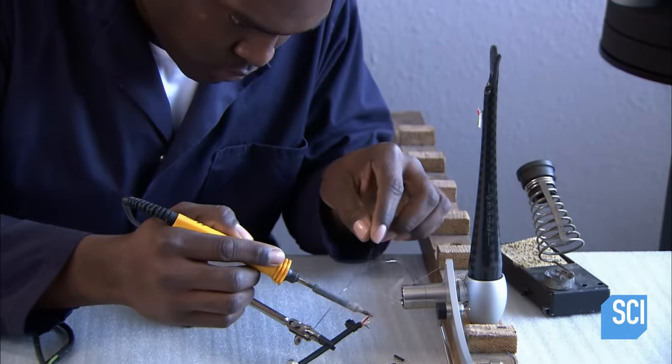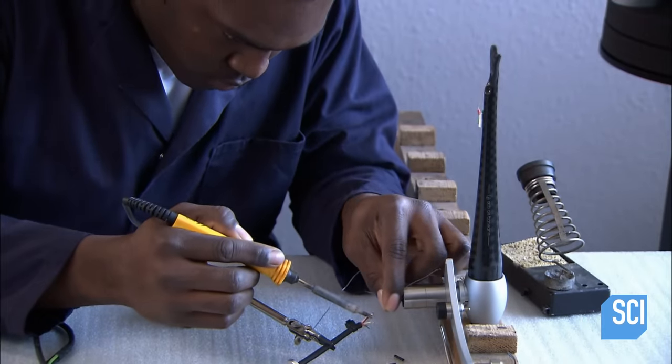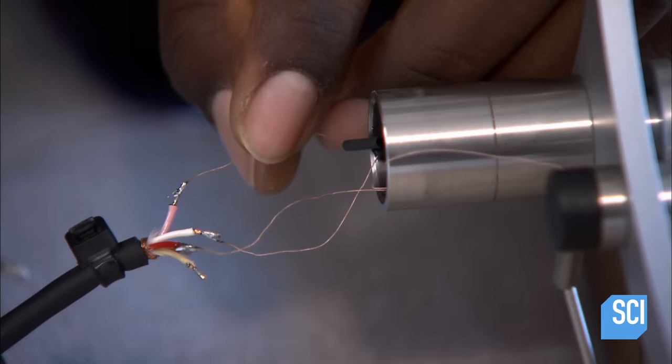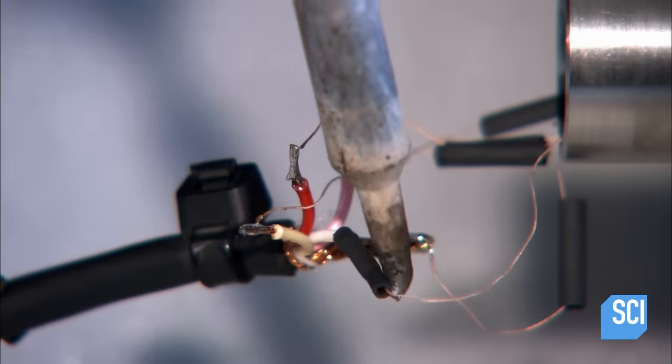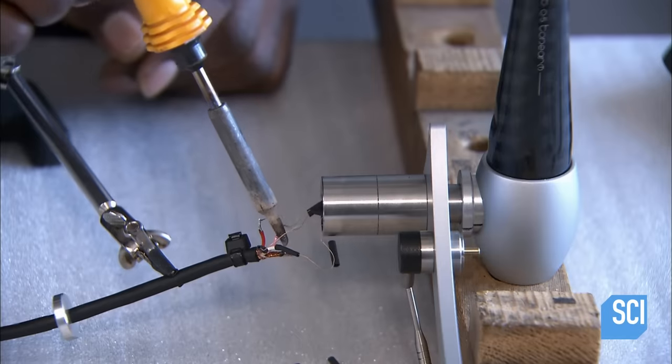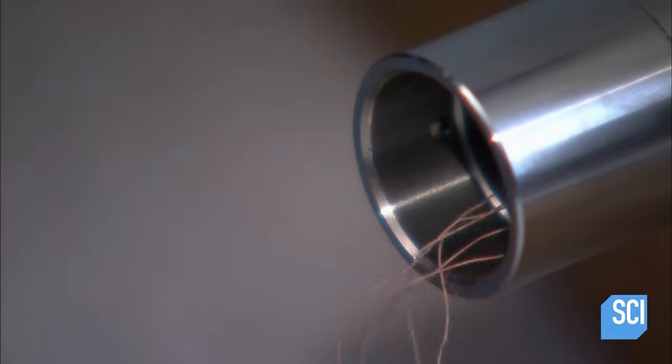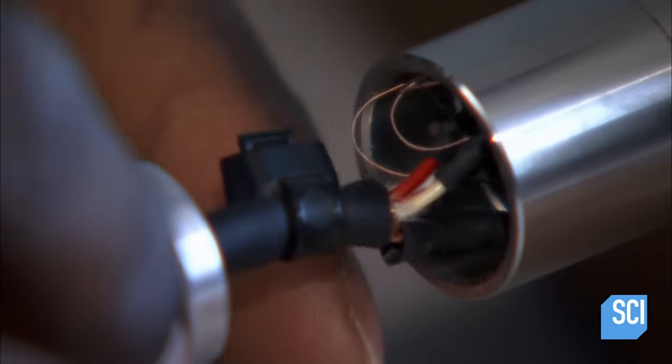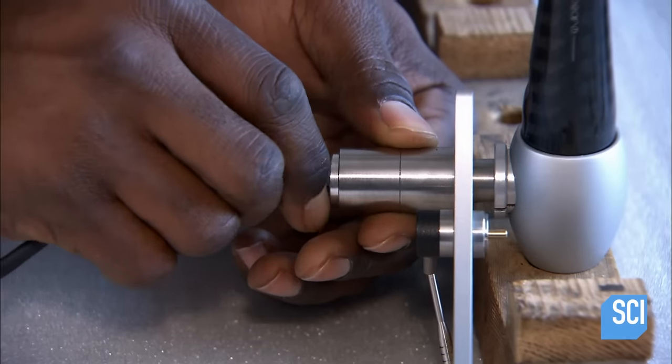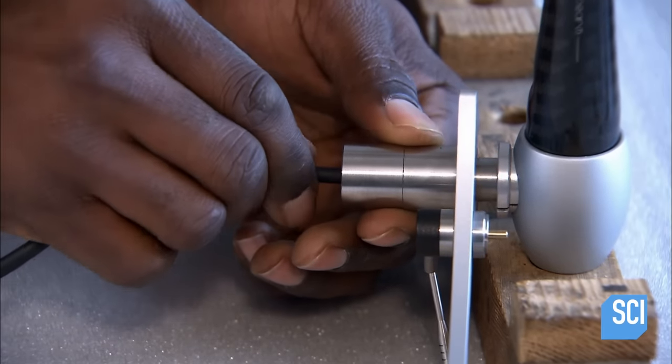With the turntable tonearm now upright, he solders the wires that are protruding from the joint to external wiring for the amplifier. And once all the connections have been made, he inserts the wires into the metal joint. Ensconced in this joint, the connections are well protected and can't be pulled apart.